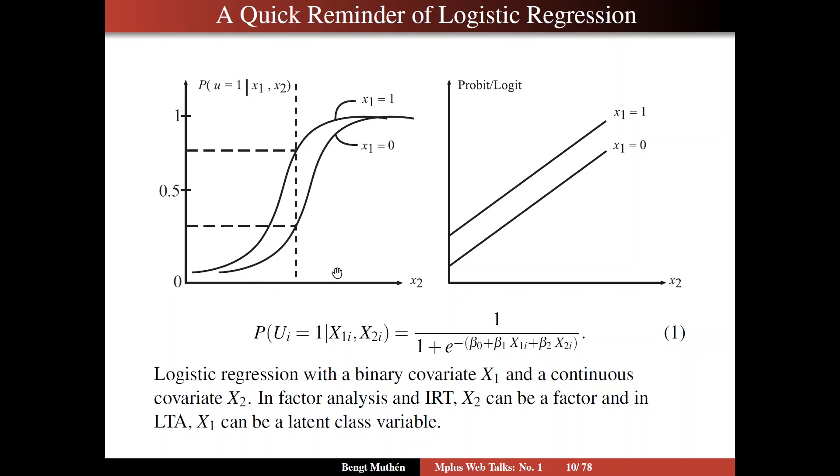What I am doing here is trying to connect a picture of what is going on with formula equation 1. In the picture, on the x-axis you see a continuous covariate x2, you can think of that as h, and on the y-axis you have a probability scale going from 0 to 1 for the probability of u being equals 1, say, having lung cancer.